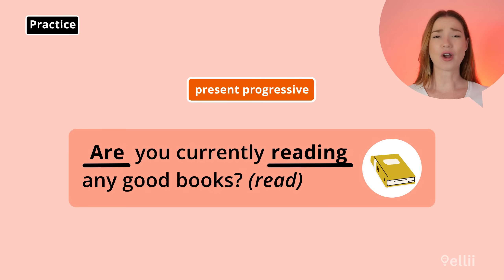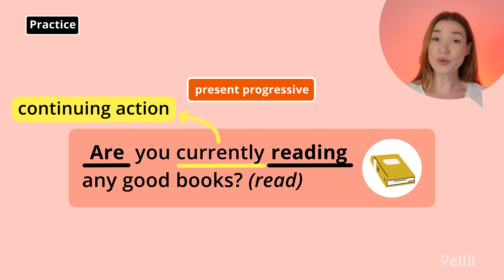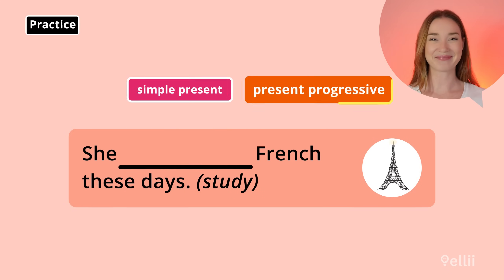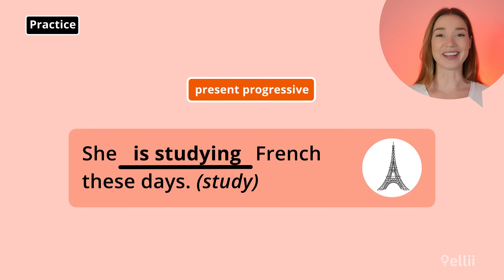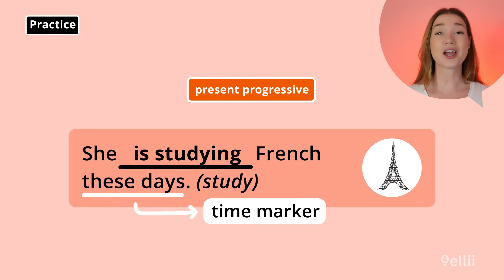The answer is: are you currently reading any good books? The time marker currently indicates a continuing action, so we need a present progressive verb. We need to start a question with an auxiliary verb — in this case, are. Next: she is studying French these days. We need to use the present progressive, is studying, when the time marker is these days.